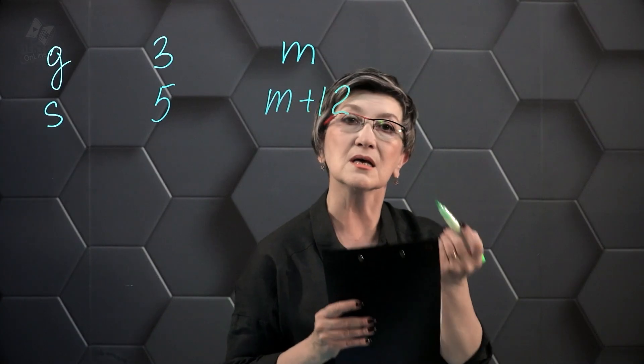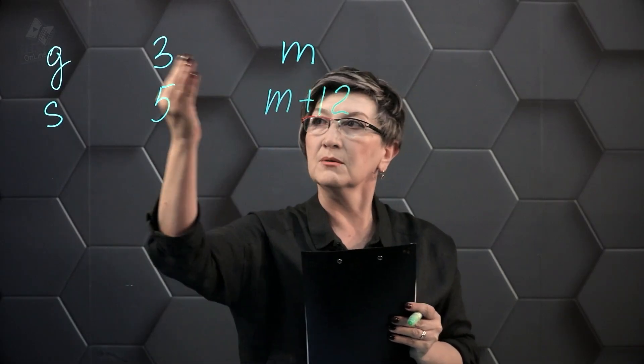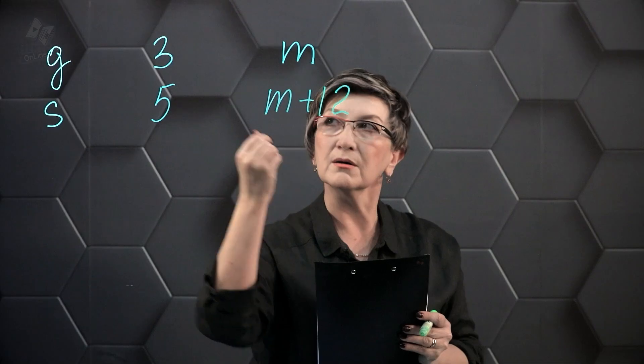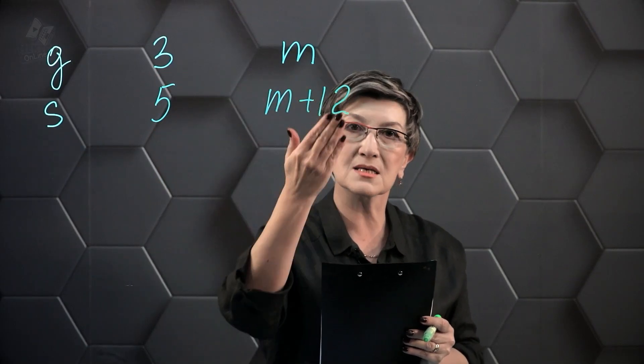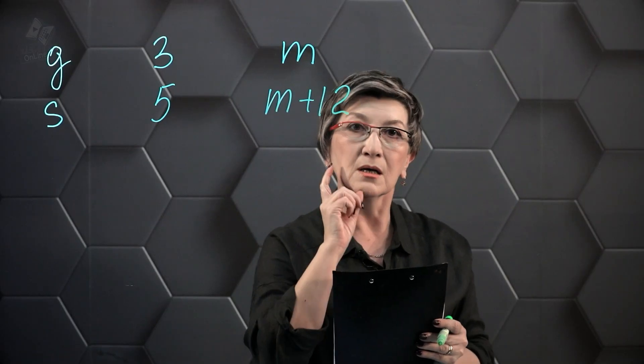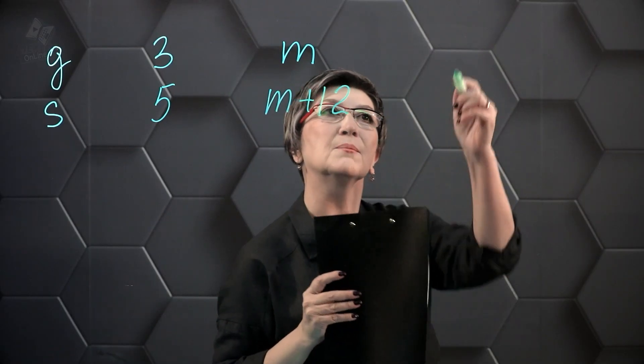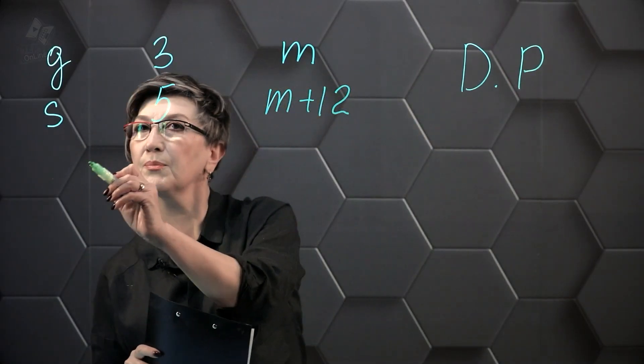Now let's do the proportions. These quantities are directly proportional because there's more silver in this alloy than gold. The masses of silver are greater than the masses of gold. Then it's direct proportionality. Let's make a proportion. 3 divided by 5 equals M divided by M plus 12.